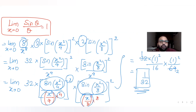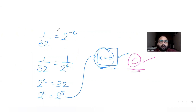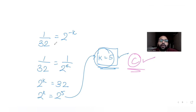To summarize: I took out the common factor, used the identity 1 minus cos(2θ) = 2sin²θ, then applied the standard limit sinθ/θ = 1. The answer came out as 1/32, and equating with 2^(−k) gave k = 5, which is option C. I'll see you tomorrow with the next question — please like, subscribe, and share these JEE Advanced videos with your friends.